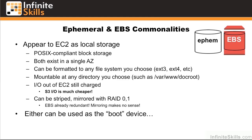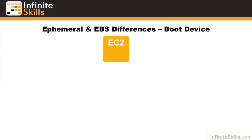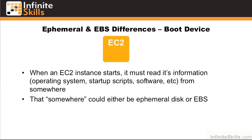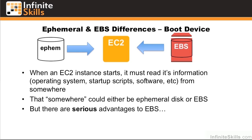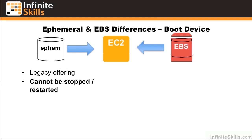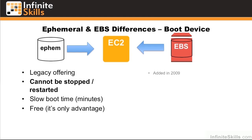Either can be used as the boot device. When we talk about a boot device, we mean that when an EC2 instance spins up, it has to read its information from somewhere — that somewhere could be either ephemeral disk or EBS. But there are very serious advantages to using EBS for the boot drive. Ephemeral is a legacy offering. It cannot be stopped or restarted, its lifetime is tied to the instance itself, it has a very slow boot time typically measured in minutes, and it's free — which is its only advantage.